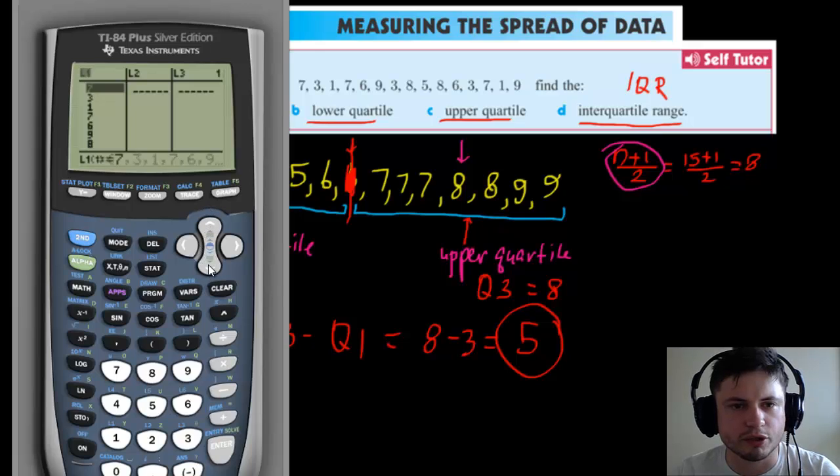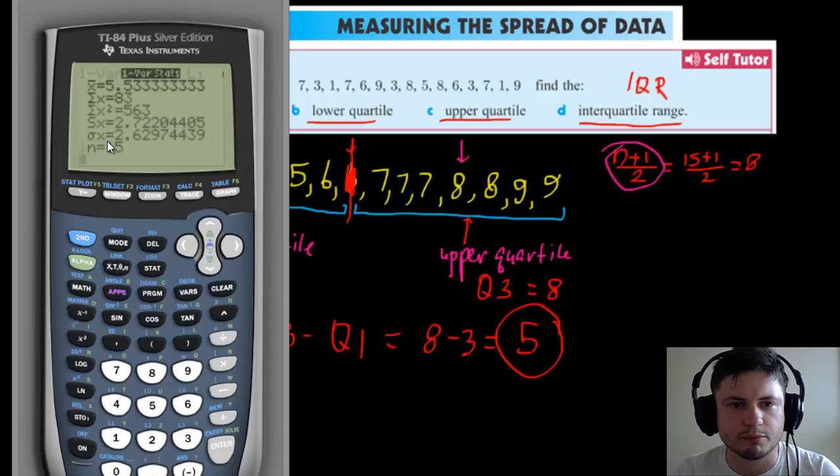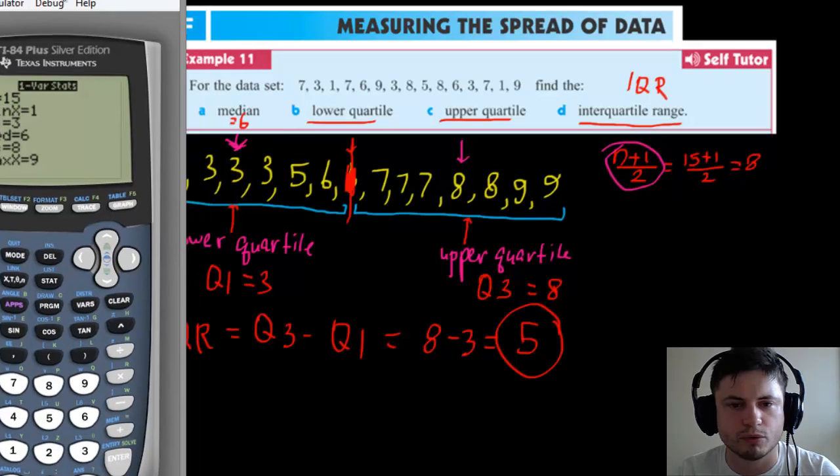3 on the bottom. It doesn't have to be in order; it just needs to be in there. Let's do CALC again. So n has to be 15 because there are 15 numbers. Alright, good. So this is the mean, this is standard deviation which we'll talk about later. Q1 right here—Q1 = 3. This is exactly what we found: Q1 is 3,